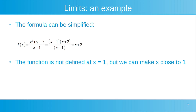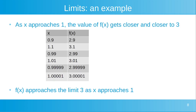The function is not defined at x equals 1, but we can make x close to 1. As x approaches 1, f of x gets closer and closer to 3. For x equals 0.9, f of x is 2.9; for x equals 1.1, f of x is 3.1. Making x even closer: for x equals 0.99, f of x is 2.99, and for x equals 1.01, f of x is 3.01. For x equals 0.99999, f of x is 2.99999. So f of x approaches the limit 3 as x approaches 1.